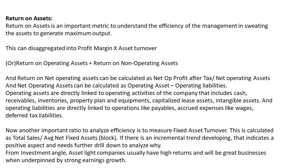The second formula — return on operating assets plus return on non-operating assets — is especially important for businesses with a lot of capital involved. Return on net operating assets can be calculated as net operating profit after tax (NOPAT) divided by net operating assets. Net operating assets are calculated by subtracting operating liabilities from operating assets. Operating assets include cash, receivables, inventories, property plant and equipment, capitalized lease assets, and intangible assets.